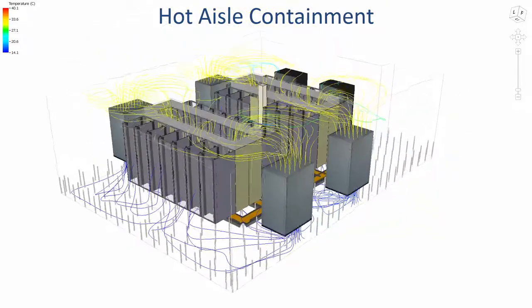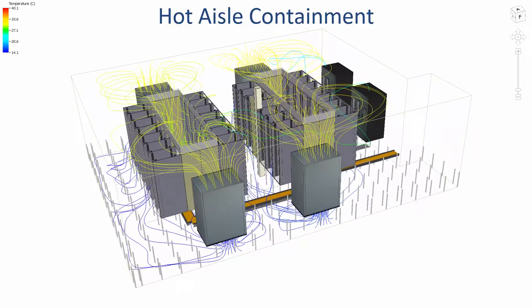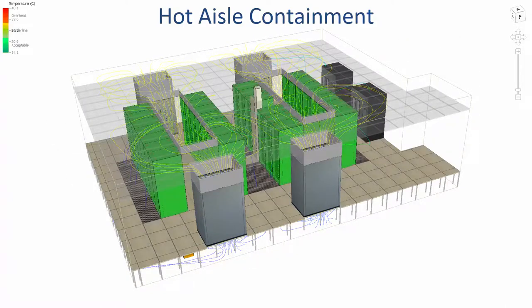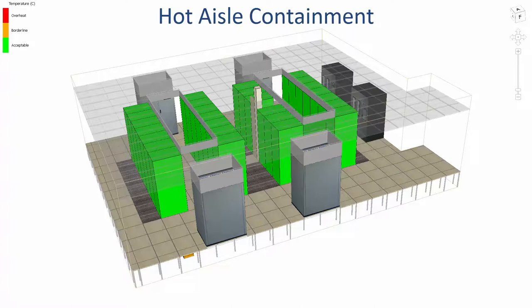Streamline plots better highlight the path travelled by the conditioned air. Once again, the thermal state of the equipment are all within the acceptable range and much better than the uncontained system.